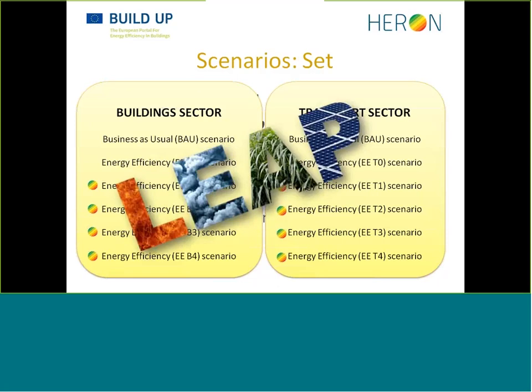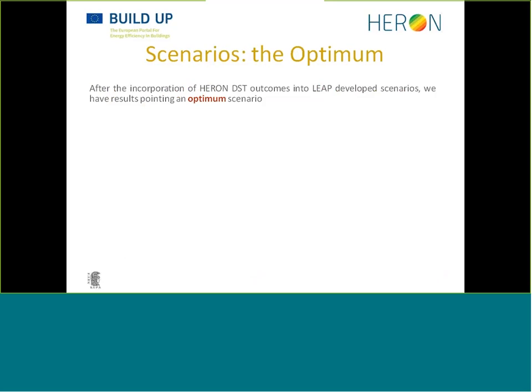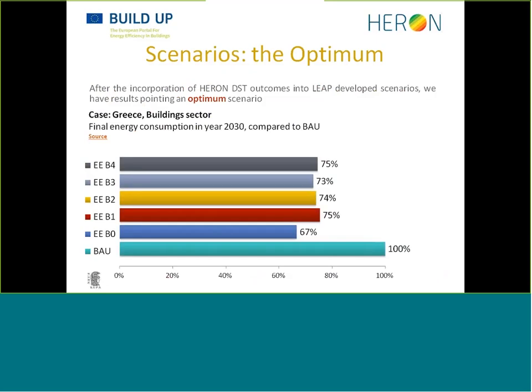When all our scenarios were ready, we ran them through the LEAP energy tool. For the Greece building sector case study, we got these results. And as you can see, we have a winner. EEB0 is, according to these results, without a doubt the scenario with the least final energy consumption in 2030 compared to BAU, followed by the very ambitious EEB3 and a decent EEB2.